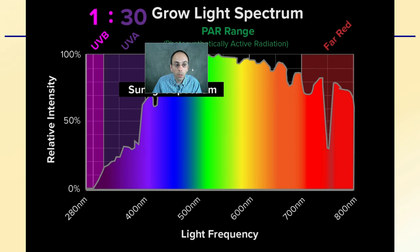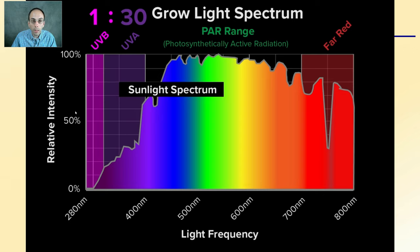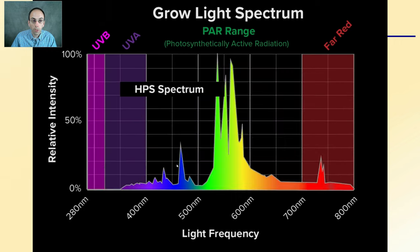Here we're looking at a sunlight spectrum to give you an idea, looking mainly at the PAR range — UVB, UVA, far red, and the ROY-GBV spectrum for light frequency produced. It's a 1-to-30 UVB to UVA ratio for the sunlight spectrum.